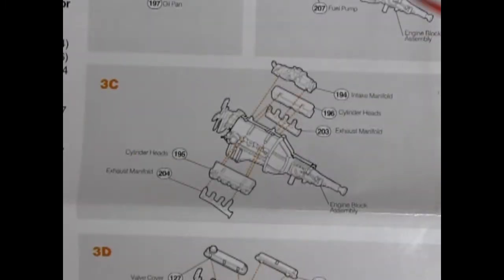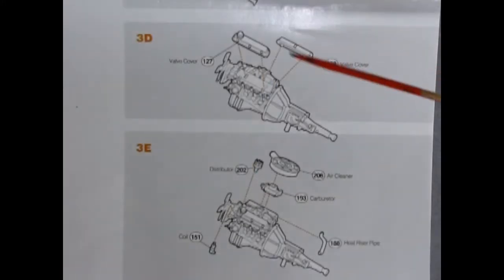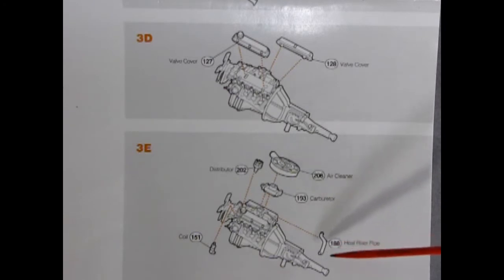We continue our engine assembly with our intake manifolds, cylinder heads, and exhaust manifolds all gluing onto our assembled engine followed by our valve covers, air cleaner, carburetor distributor, coil, and heat riser pipe.